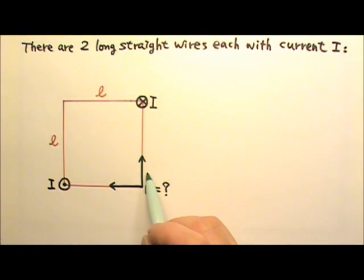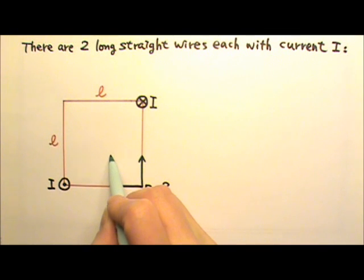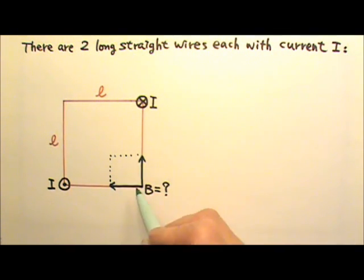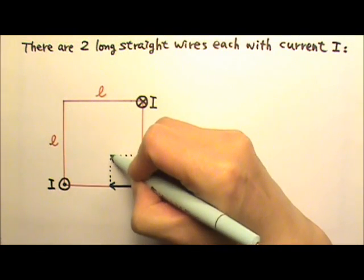To add these two vector fields, I can make a parallelogram. And in this case, my parallelogram is a square, and the sum is the diagonal.